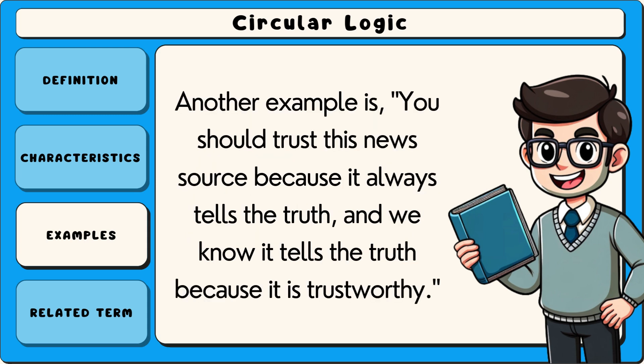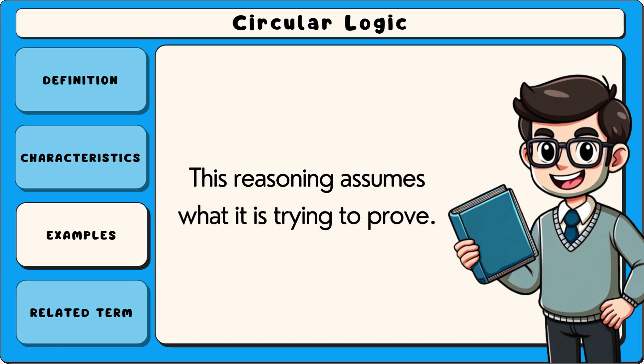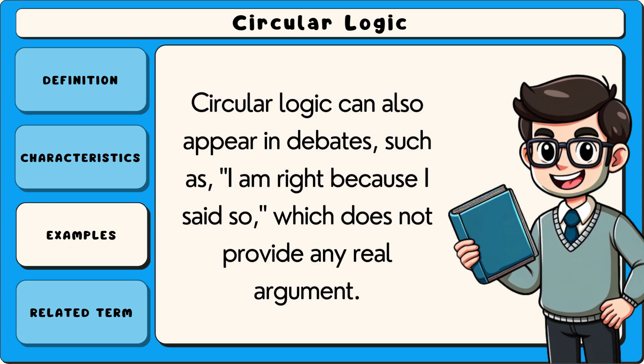Another example is: you should trust this news source because it always tells the truth, and we know it tells the truth because it is trustworthy. This reasoning assumes what it is trying to prove. Circular logic can also appear in debates such as, 'I am right because I said so,' which does not provide any real argument.